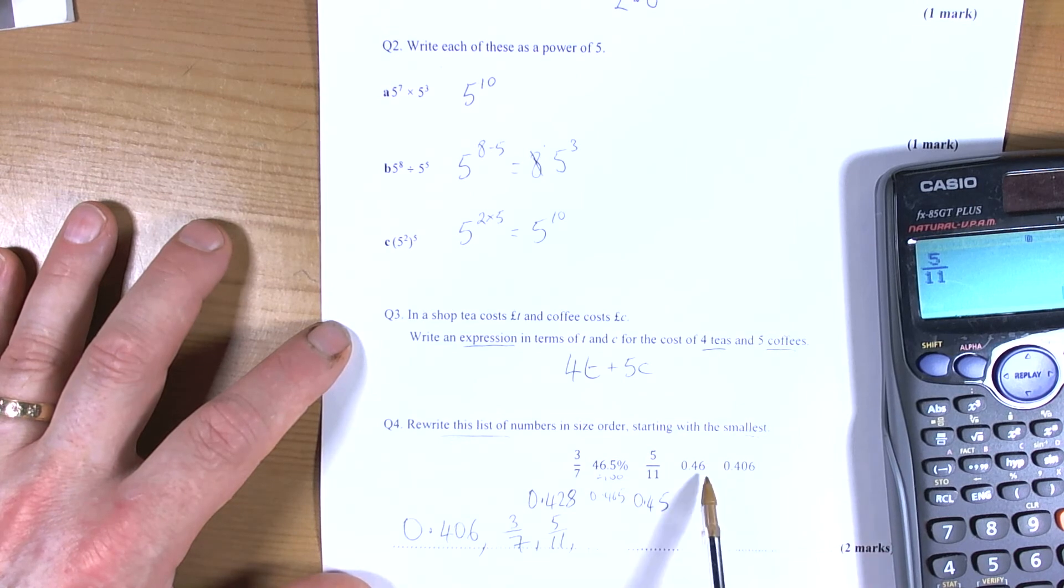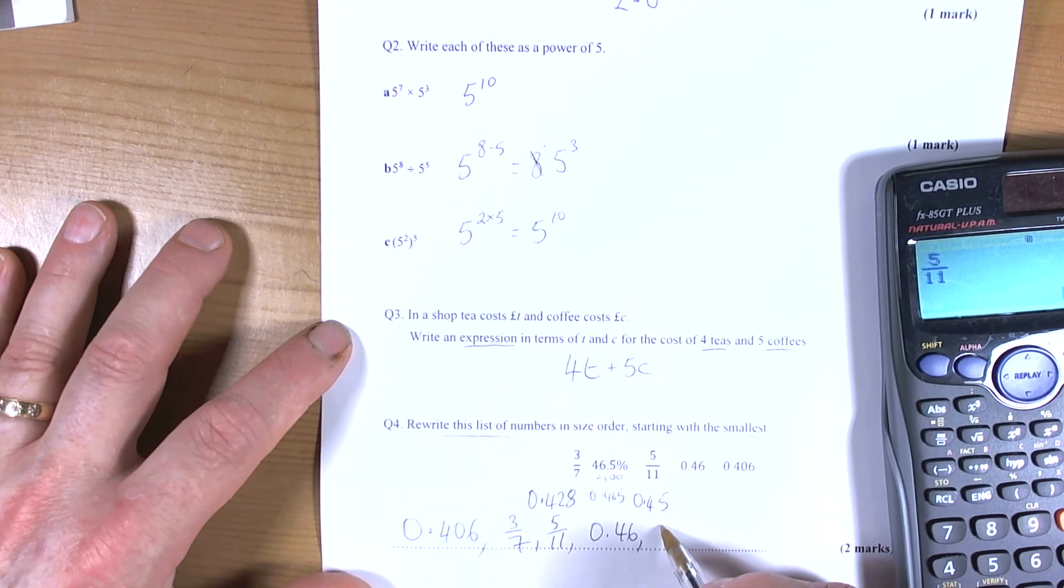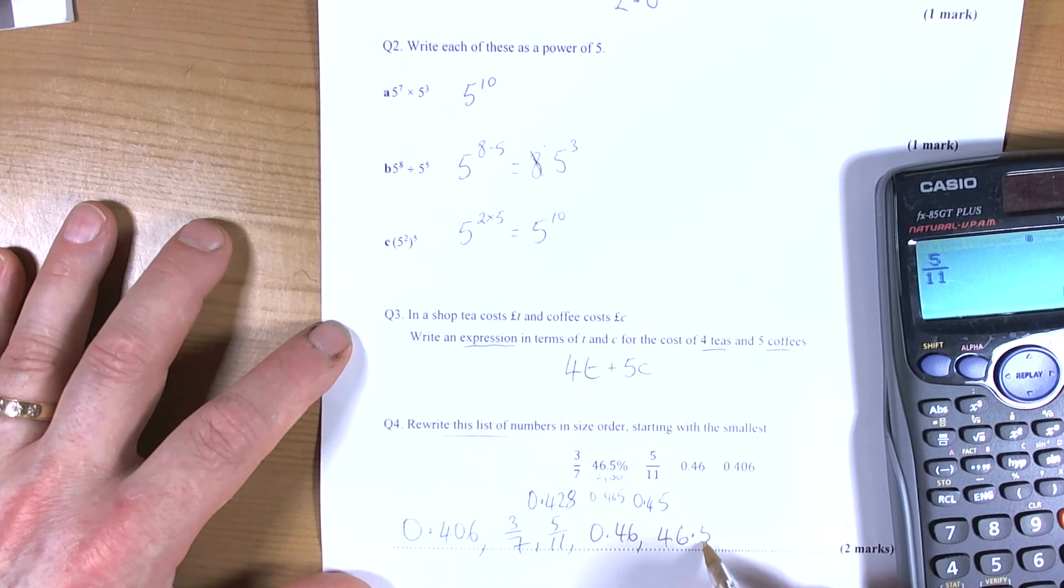And then we've got 0.46 terminates and then 465. So this one's smaller. So 0.46. And then we've finished with 46.5%.